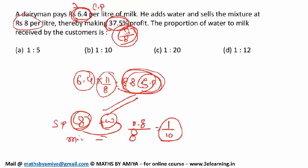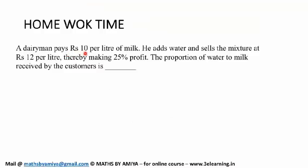And your homework is: A dairyman pays rupees 10 per liter of milk. He adds water and sells this mixture at rupees 12 per liter, thereby making 25 percent profit. The proportion of water to milk received by the customer is what?